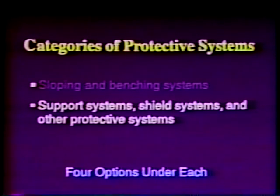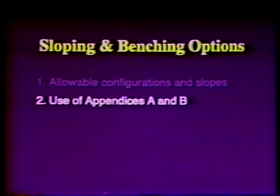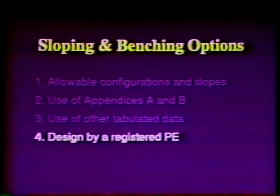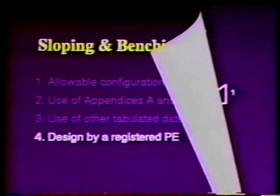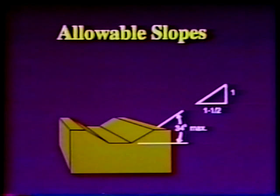The use of either category of protective systems requires the choice of one of four design options. For sloping and benching systems, the options include allowable configurations and slopes, the use of Appendices A and B, designs using other tabulated data, and design by a registered professional engineer. The first option specifies allowable configurations and slopes: any excavation less than 20 feet in depth may be sloped at an angle not steeper than one and one-half horizontal to one vertical, 34 degrees measured from the horizontal. Such slopes meet OSHA's requirements for worst-case soils, Type C, as defined in 29 CFR 1926, Subpart P, Appendix A.